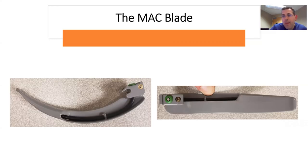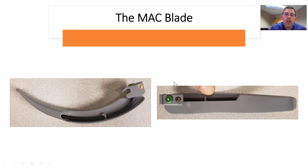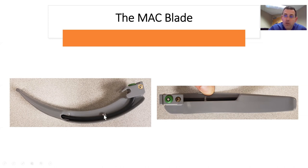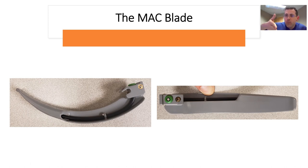Let's start with the MAC blade. The details of these blades will be covered in each individual section on how to use them. Here, I'll give just enough information relevant to the anatomy. The first thing to notice is that this blade is curved. What that means is that when you have a curved blade, the tip goes into the vallecula. On the side you have a tongue sweep, made for you to sweep the tongue out of the way. This blade is curved, but not curved enough that you can see the glottic opening directly by looking through the mouth.